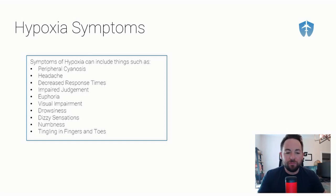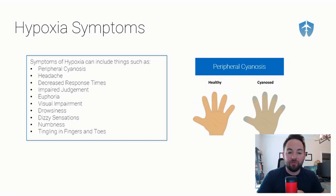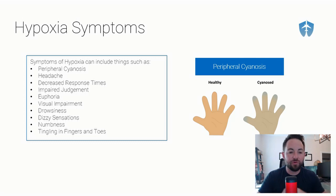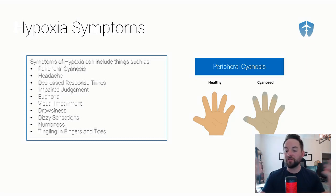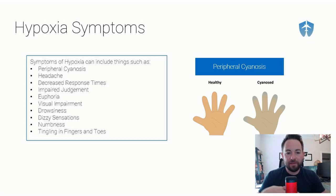Those are the four different types of hypoxia. Now a couple more things — the symptoms. If you are getting hypoxia, what are you going to feel? You may experience peripheral cyanosis where your fingertips or lips start to turn blue, headache, decreased response times, impaired judgment, euphoria — a feeling that everything is fantastic even if things are going wrong — visual impairment, drowsiness, dizzy sensations, numbness, and tingling in the fingers and toes.